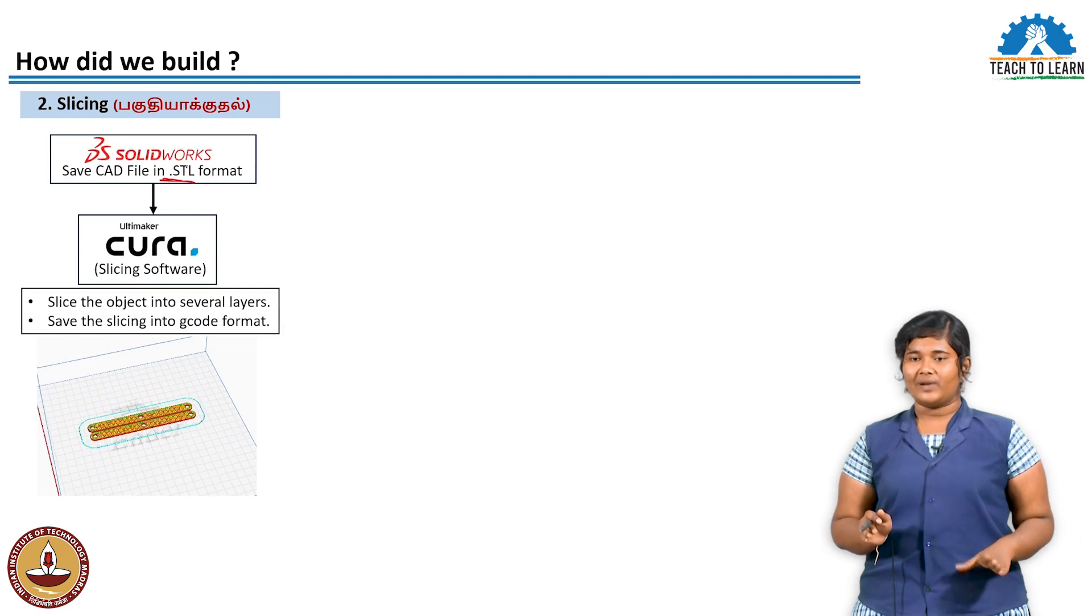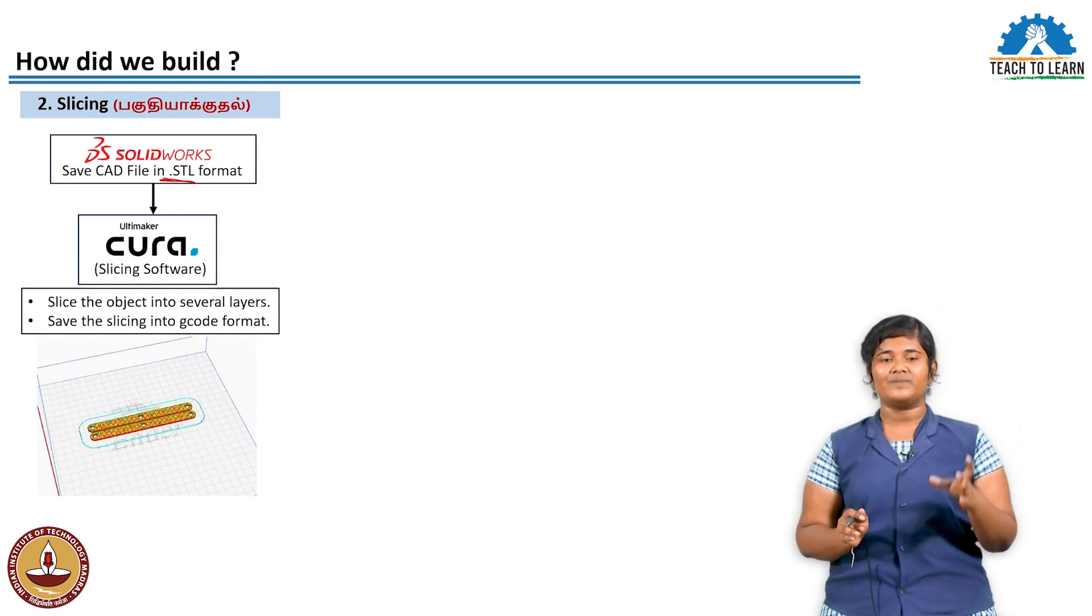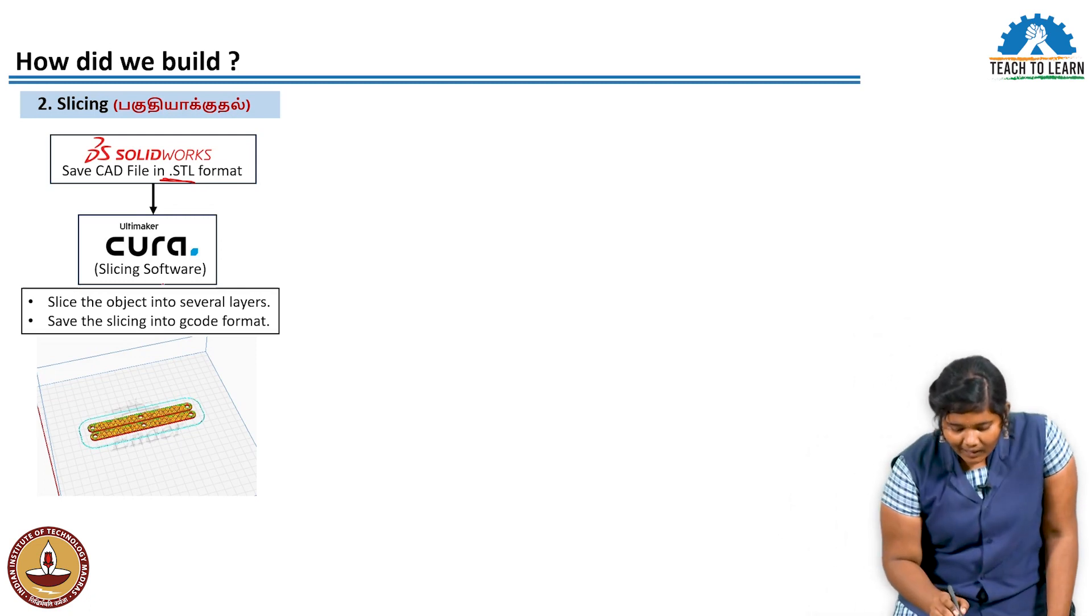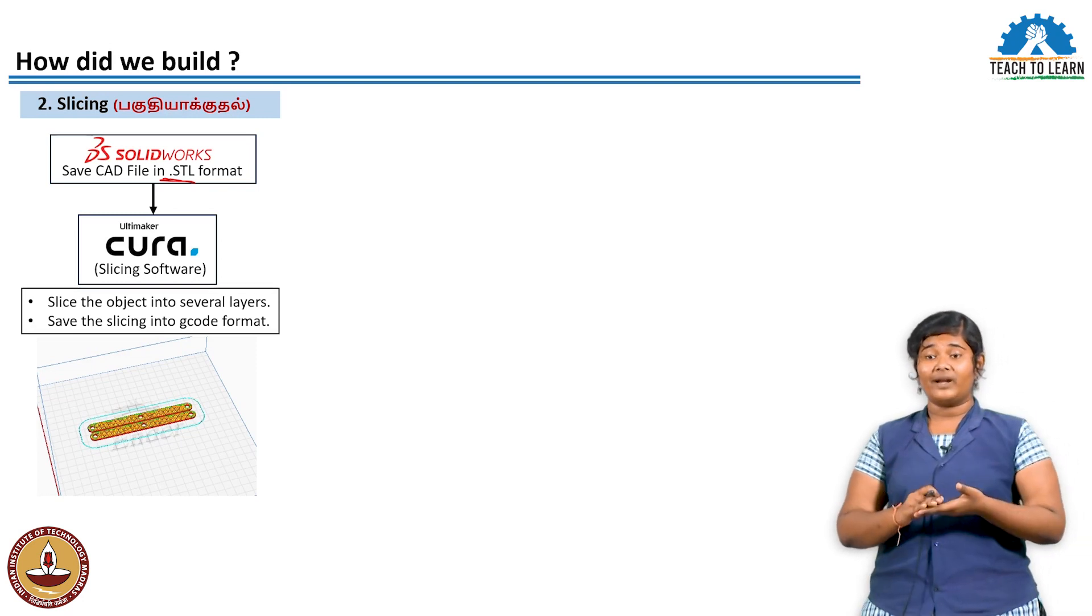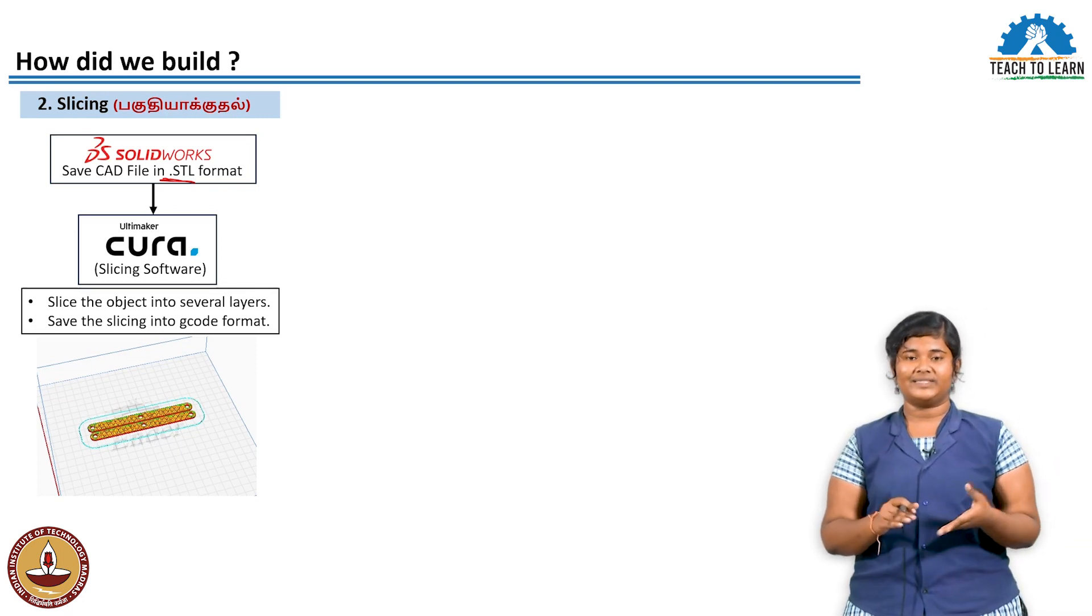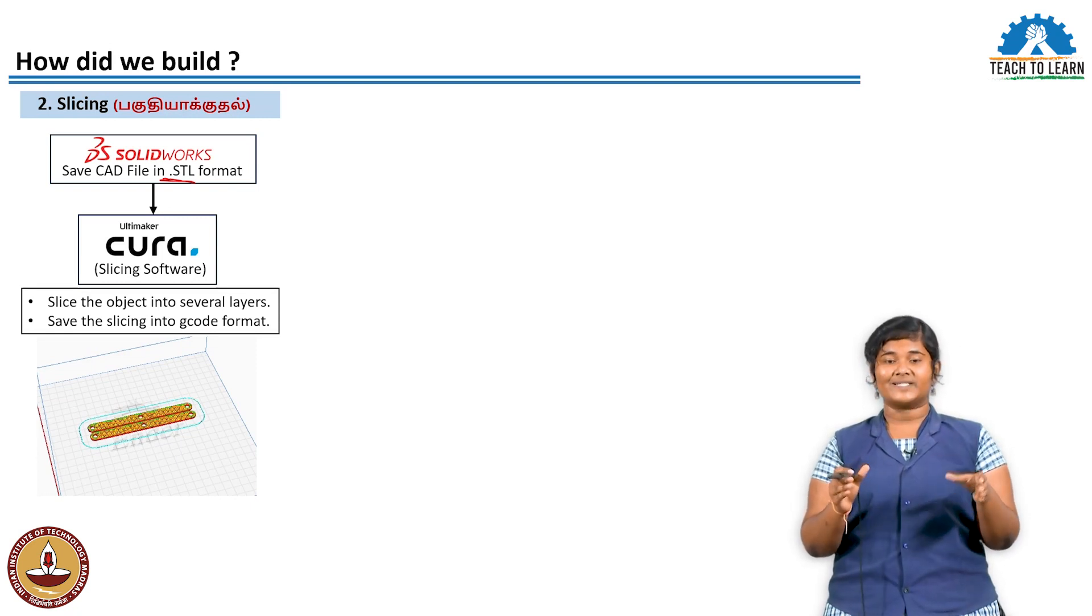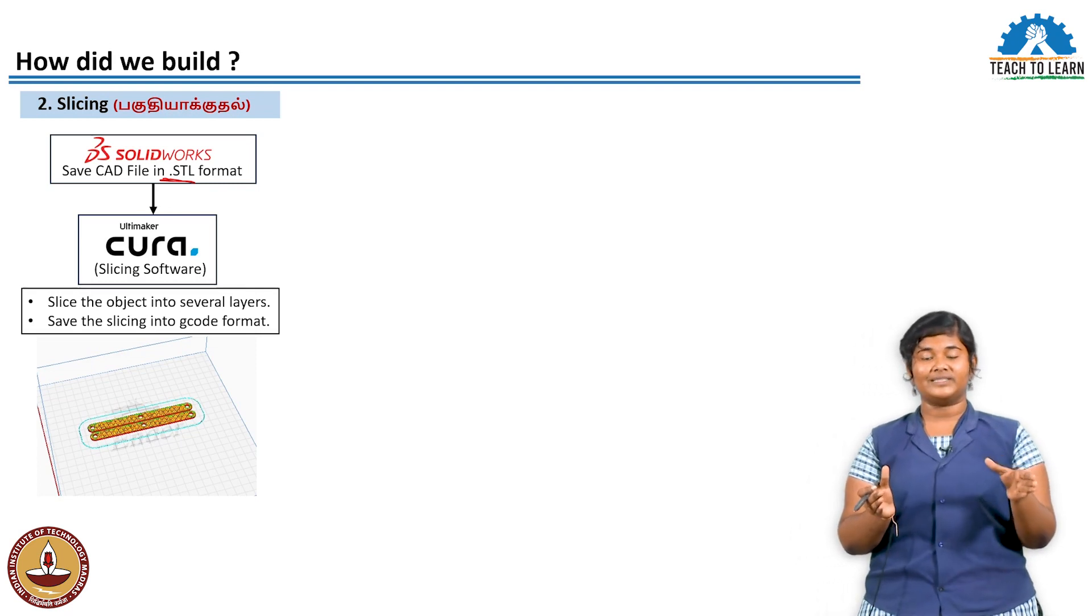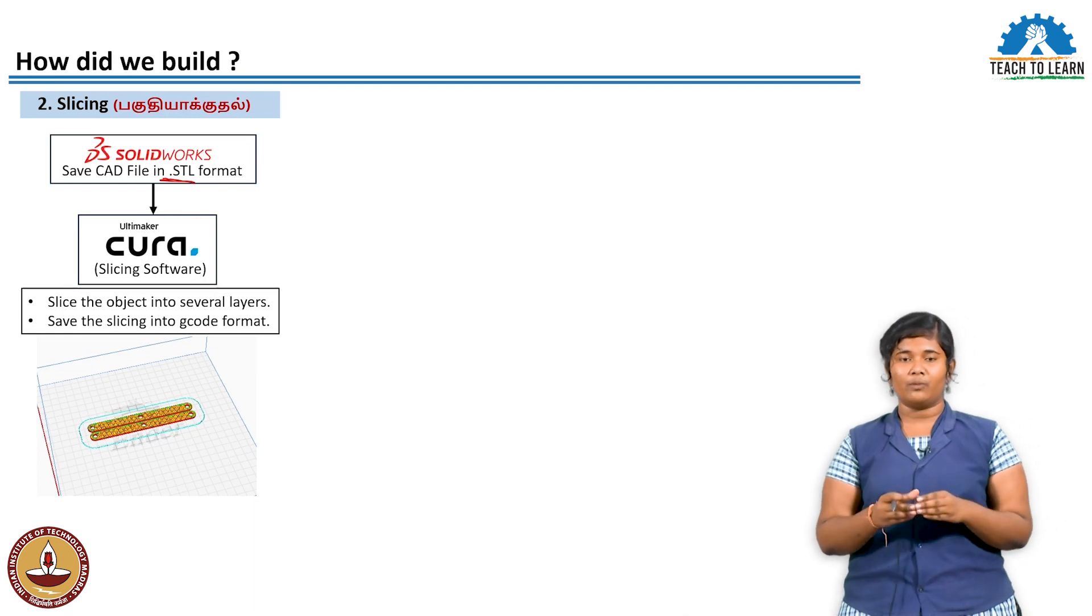Next is slicing. Just like cutting vegetables into small pieces, slicing cuts the object layer by layer. We set some infill density. If we use full density, the object takes more time to print, so we reduce the density to save time.